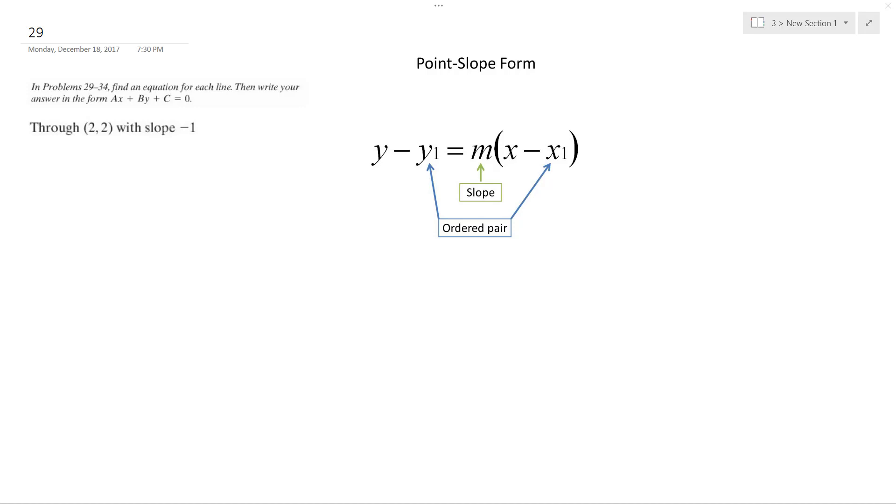All right, so what I have here is a point, and then I got the slope, and I want to find the equation of line and give it in the form that they have here.